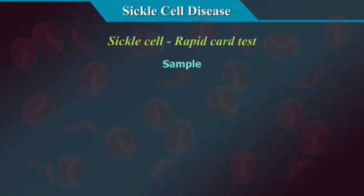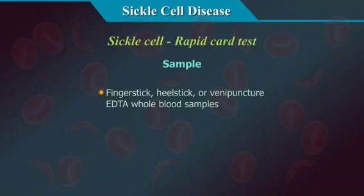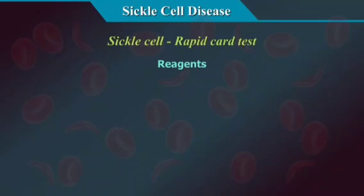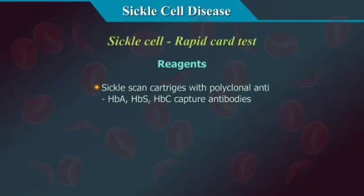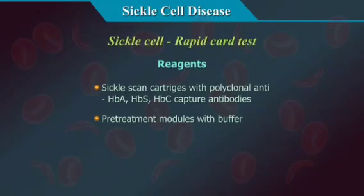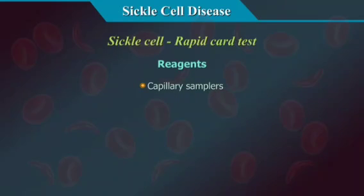Sample types: finger stick, heel stick, or venipuncture EDTA whole blood. Reagents: sickle scan cartridges with polyclonal anti-HBA, HBS, and HBC capture antibodies; pre-treatment modules with buffer; capillary samplers; lancets; and timers.